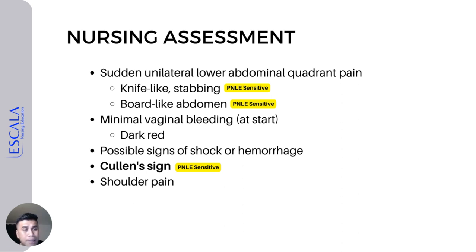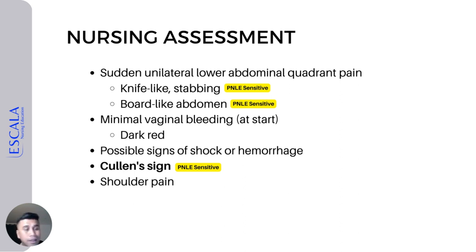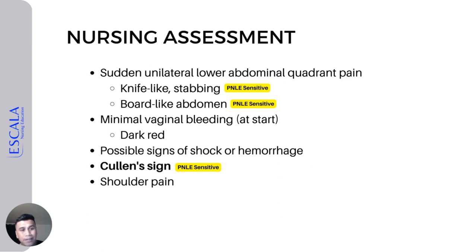Now let's talk about nursing assessment. What are the things we will be noting in our patients? First, this is very pathognomonic for ectopic pregnancy: sudden, unilateral, lower abdominal quadrant pain, defined by the book as knife-like or stabbing pain. Remember, it is very painful — severe, knife-like stabbing pain in the lower abdominal quadrant. There is also a board-like abdomen — the lower abdomen of the patient becomes rigid.